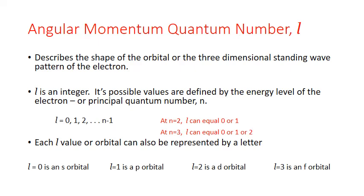Going further out, at n equals 3, orbitals can be associated with L equals 0, L equals 1, or the limit of 3 minus 1, which is L equals 2. In the opposite direction, at n equals 1, the limit is 1 minus 1, or 0, so there is only one shape associated with the closest energy level, where L can equal only 0.